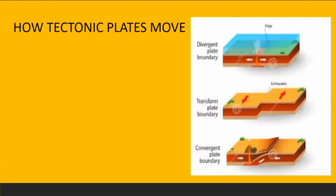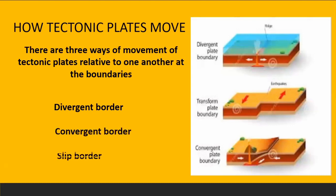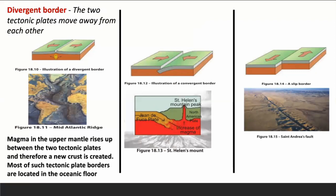There are three methods of movement of tectonic plates relative to one another at the boundaries: divergent border, convergent border and slip border. At a divergent border, the two tectonic plates move away from each other. Magma in the upper mantle rises up between the two plates and a new crust is created. Most such tectonic plate borders are located in the oceanic floor — for example, the mid-Atlantic ridge, located along the Atlantic Ocean and part of the longest mountain ridge.